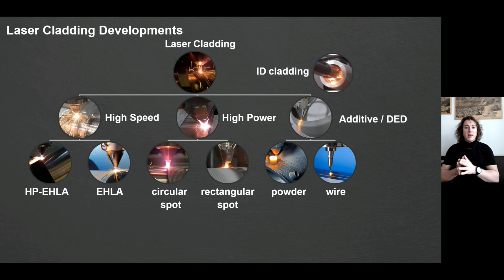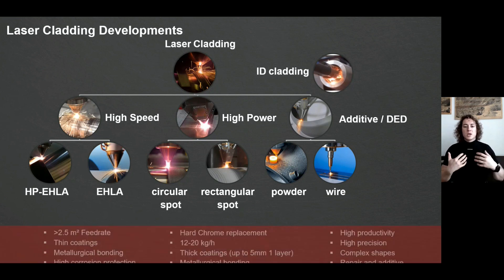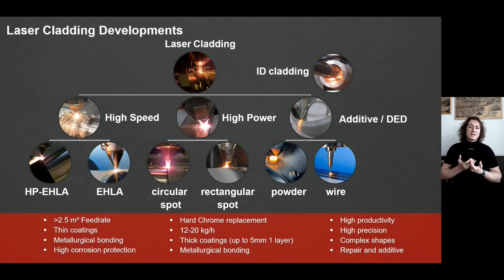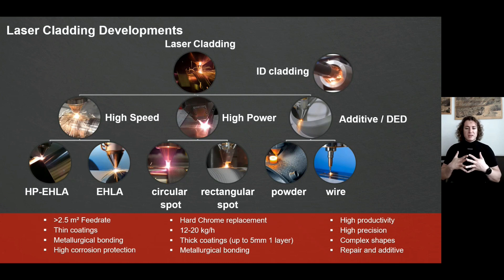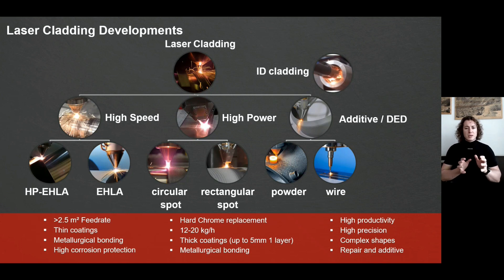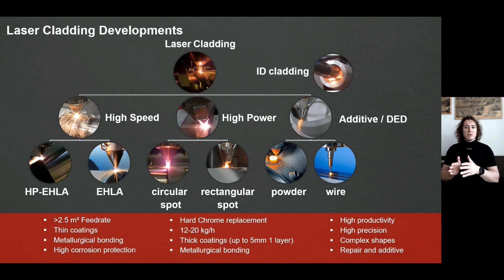Looking at the high power process, we now have lasers operating at power levels around 20 to 25 kilowatts. This enables you to feed around 20 kilograms of powder per hour to the surface, building thick coatings up to five millimeters thick while still maintaining metallurgical bonding and a controlled heat affected zone. This gives you an idea of the high productivity already achievable with laser cladding, and how this technology can replace or improve our understanding of the future of hard facing.